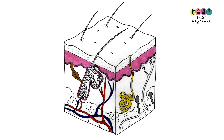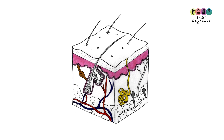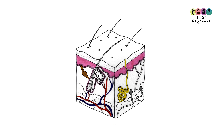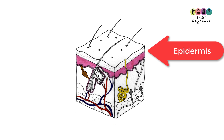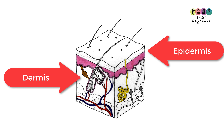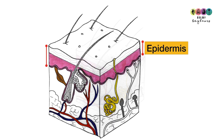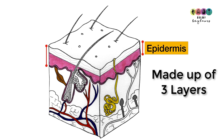The skin is made up of two layers. The outermost layer is known as the epidermis, and inside this is the dermis. The epidermis is the outermost layer and it itself is divided into three layers.